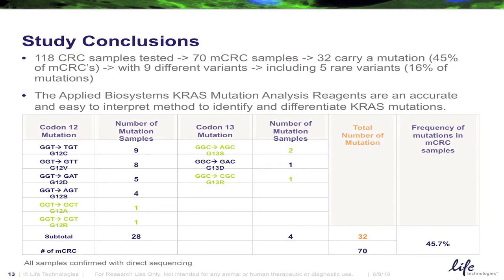Of the 118 samples tested, 70 of which were metastatic, all of the mutations discovered showed up only in those metastatic samples. Most commonly the regions picked up were in G12C and G12V. Of all nine variants picked up in codons 12 and 13, five proved to be very rare variants in the areas of G12, G12A, G12R, G13S, and G13R. Overall, all 32 mutations detected showed up only within the 70 metastatic samples, which equates to about 46% — consistent with what we're seeing in other journal publications.